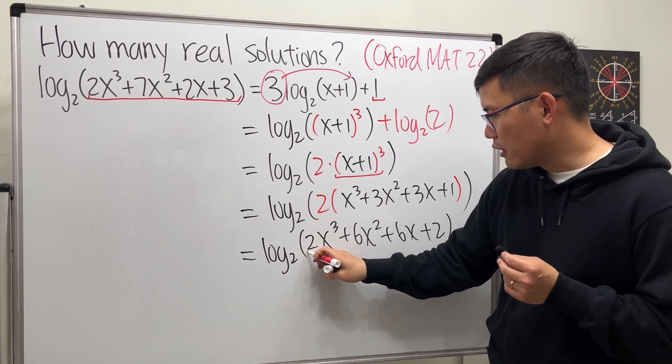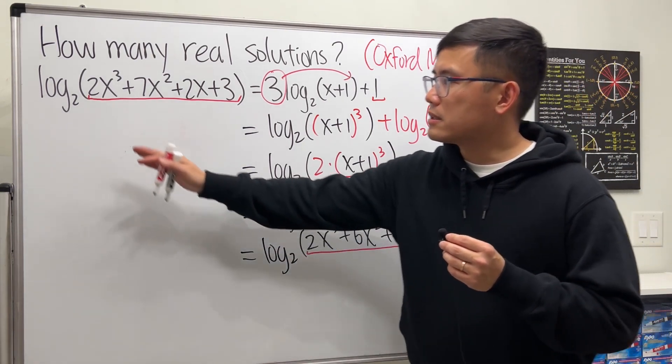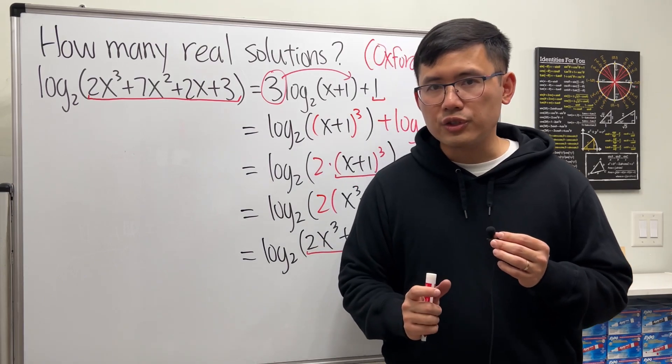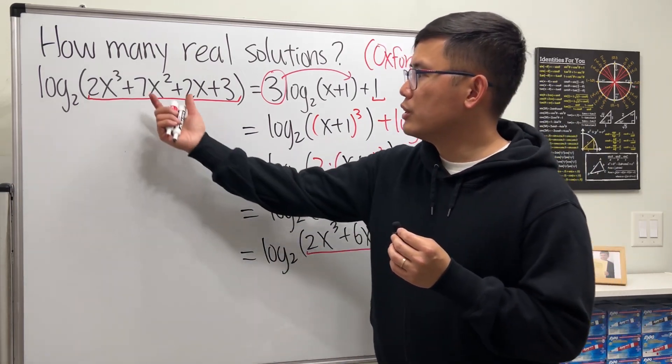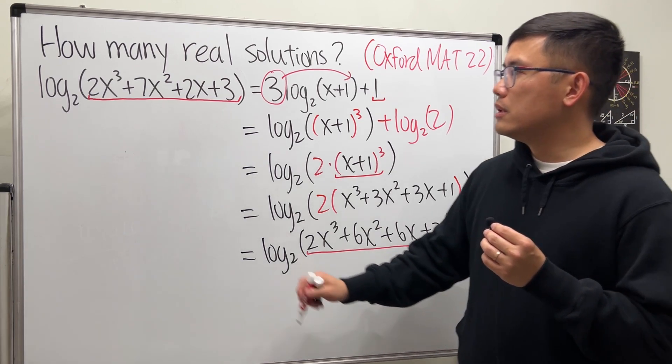Now the left hand side we have log base 2 of this and the right hand side we have log base 2 of that. Here's the key: because log is a one-to-one function, we can just focus on making the inside equal to each other.